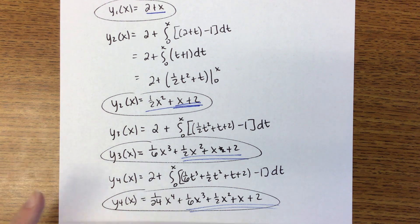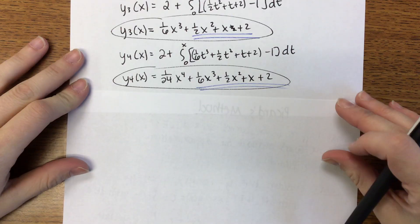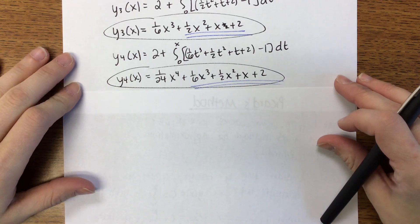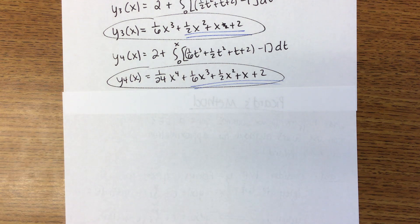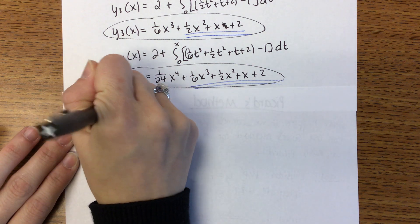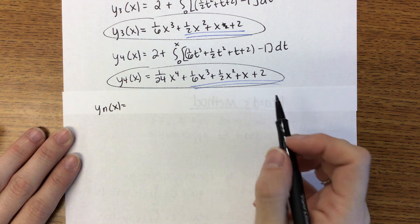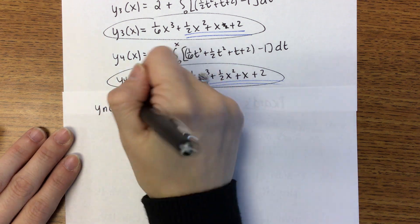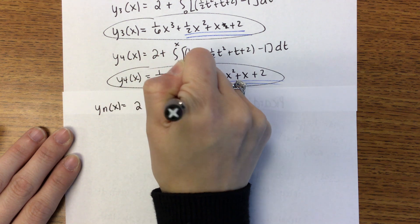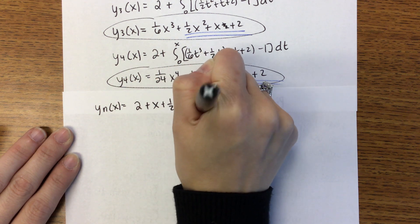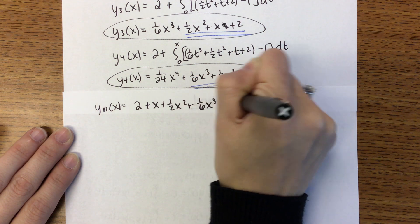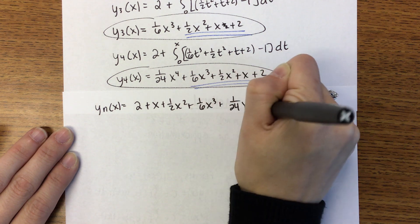So right now it kind of seems like why would we bother to do this? What help is this? Particularly when we can solve right from the beginning. The idea is that you're not going to be able to solve the differential equation. We ultimately want to know though what happens if we were to keep going. So if we were to look at YN of X, we should be able to tell how it's going to start. So we're going to get that 2 plus X plus 1 half X squared plus 1 sixth X to the third plus 1 over 24 X to the fourth and it's going to keep going.